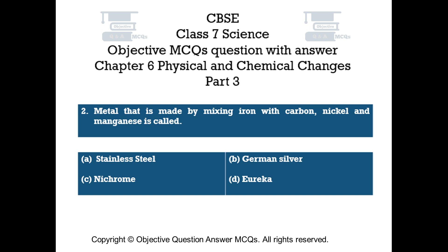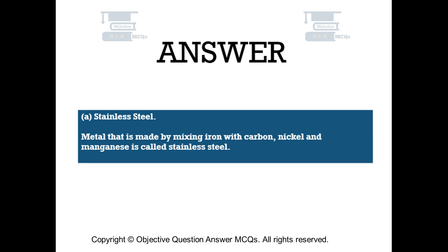Question number 2. Metal that is made by mixing iron with carbon, nickel, and manganese is called: Option A stainless steel, Option B German silver, Option C Nichrome, Option D Eureka. The right answer is Option A — stainless steel. Metal made by mixing iron with carbon, nickel, and manganese is called stainless steel.